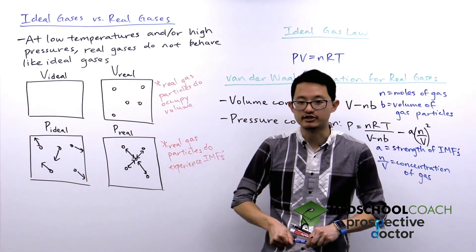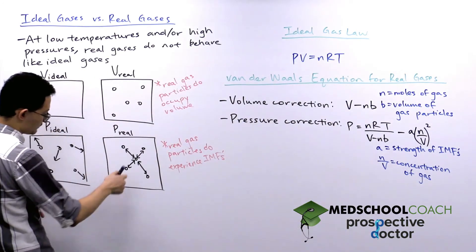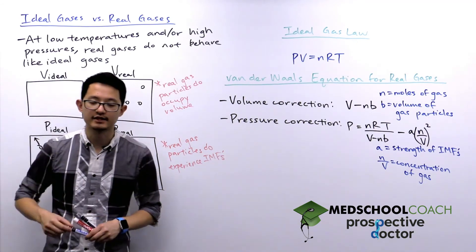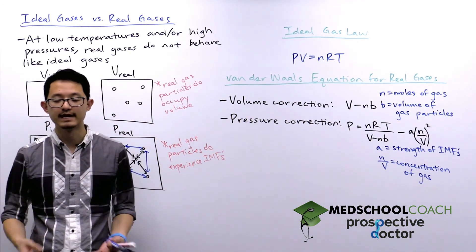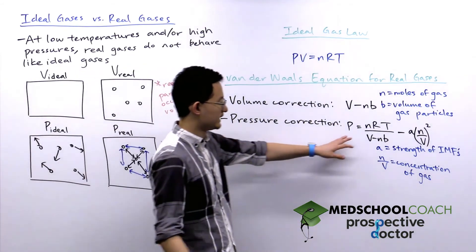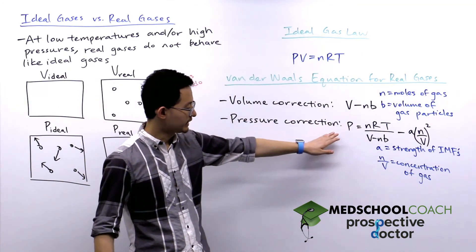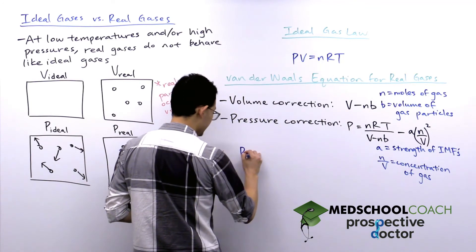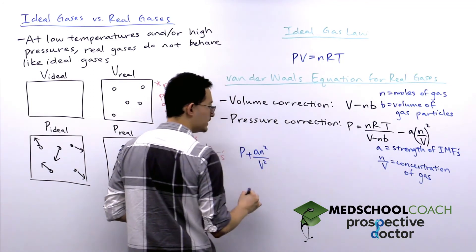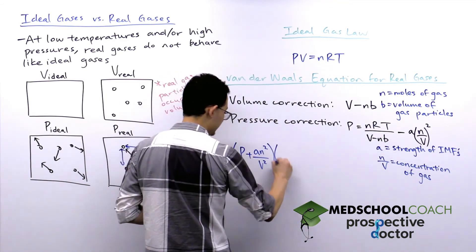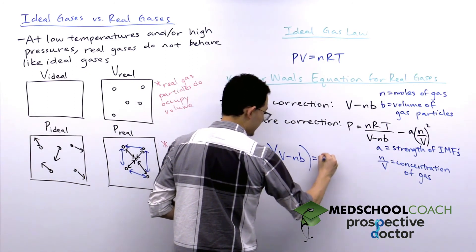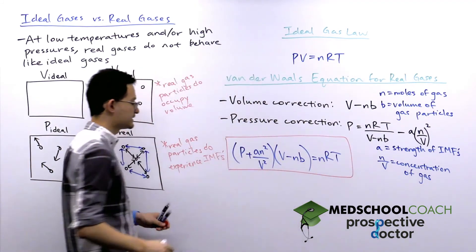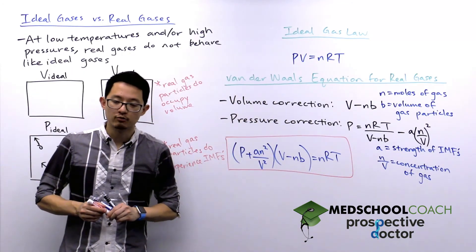We subtract by the concentration squared because all molecules can interact with each other, not just with one molecule in the center. As concentration increases, the number of attractive intermolecular forces scales exponentially. Rearranging the pressure equation — adding the an²/V² term to the left side and multiplying by (V minus nb) — gives us P plus an²/V² times (V minus nb) equals nRT. This is the van der Waals equation for real gases.